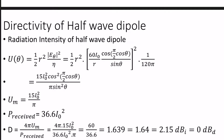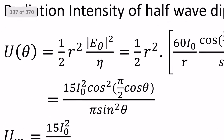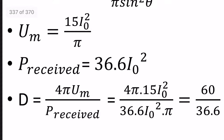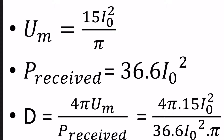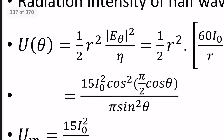Next: directivity. We will compute directivity for the short dipole using a slightly different direction — the beam solid angle approach: directivity = 4π / beam solid angle. We derive radiation intensity, find its maximum value, then substitute into the directivity equation.